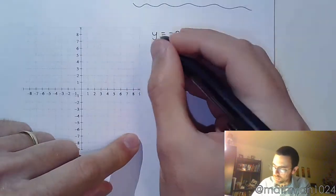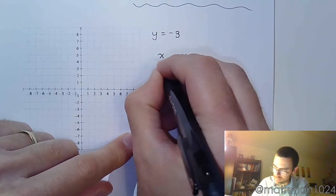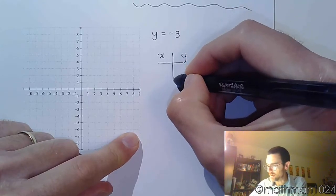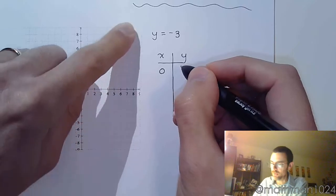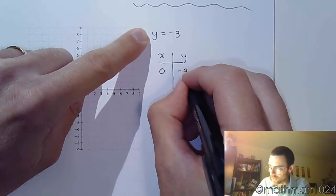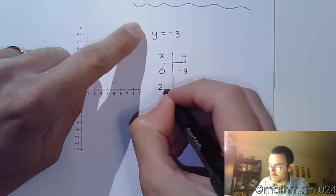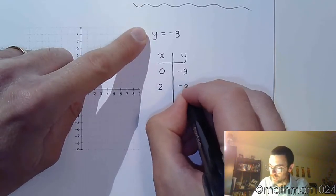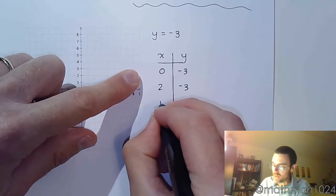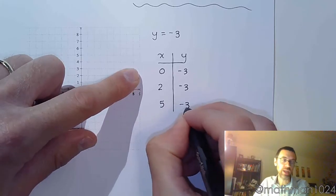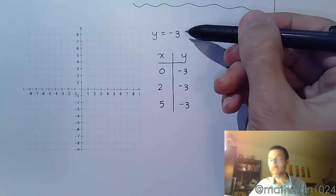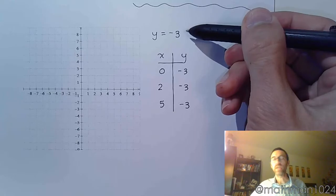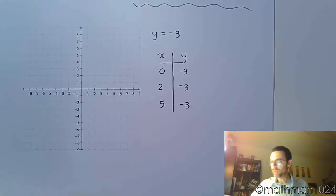If you were to try to complete a t-table of values for this, you're going to find out that it doesn't matter what you pick for x. If x is 0, what does this say? y equals negative 3. If x is 2, this says y equals negative 3. If x equals 5, y still equals negative 3. It doesn't matter what x is because there's no place for x. All you have is that y equals negative 3.